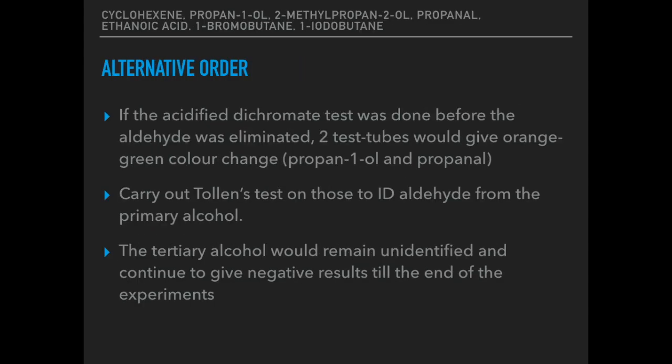There is an alternative order in which you could carry out these tests. Things like doing the carboxylic acid before the alkene doesn't really make any difference. The main issue is if you do the acidified dichromate test before you eliminate the aldehyde — in that case, two test tubes would give the orange-to-green colour change: propan-1-ol and propanal, because both can be oxidised. You would then need to carry out the Tollens test on those two chemicals to identify the aldehyde from the primary alcohol. The tertiary alcohol would remain unidentified, continuing to give negative results until the end of the experiment.